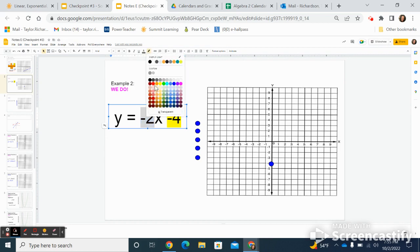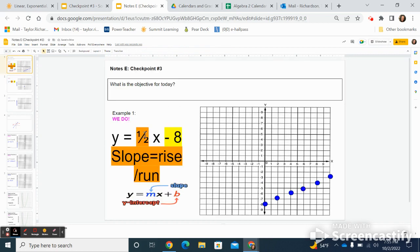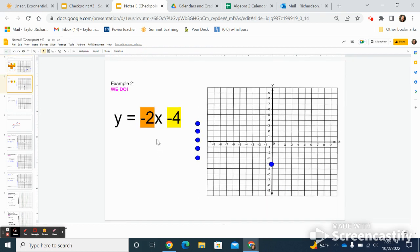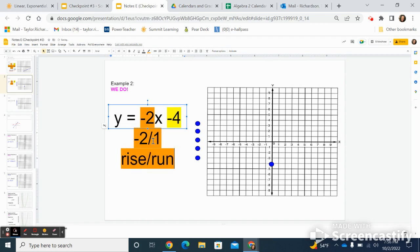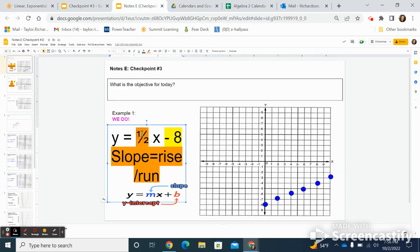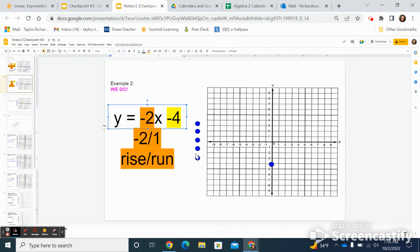Now my slope is negative 2. This looks different than my last slope, right? My last slope was a fraction. I had a nice rise over run. This one, I don't have a fraction. I have just 2. If you ever have a whole number like negative 2, we need to make it into a fraction so we can actually have our rise over run. You can make any whole number into a fraction by putting it over 1. So I'm going to say this is actually negative 2 over 1. Now I have my rise over run. My rise is negative 2. Negative means I'm going down. The 1, that run, is still positive. So I'm still going to go to the right.